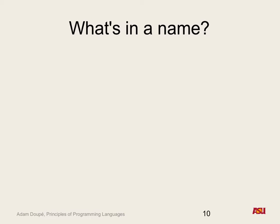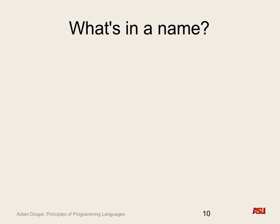Let's talk about names. One key question is: once a variable is declared, how long is that declaration valid? Only for the scope it's declared inside. But what is scope? It could be a function — variables defined in a function are accessible in that function. Or a class — a member variable is accessible throughout any method in that class.